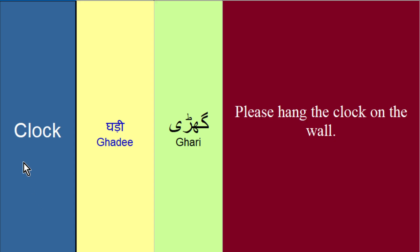Jab hum clock ki baat kertay hain, toh sab se pahle humare damaag mein ghari aati hai — khastha pe woh ghari jo hum diwaar pe bari si taangtay hain, usko clock kaha jata hai, ya more specifically, usko wall clock kaha jata hai. Issi tarhaan agar aap ke table ke oopar jo clock padhi hoti hai, chota sa timepiece, usko table clock kaha jata hai. Toh sab se pahle clock ka meaning hai ghari ka.